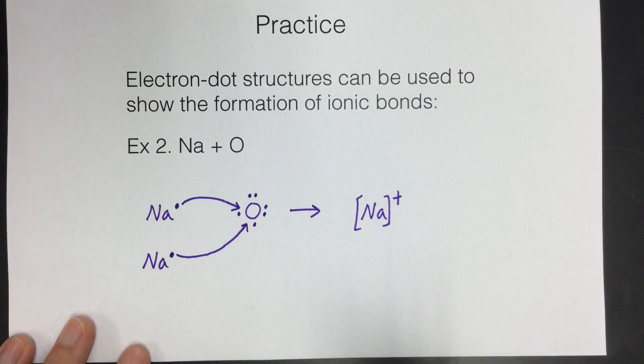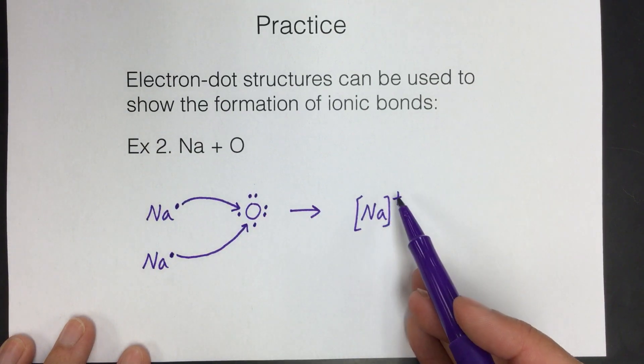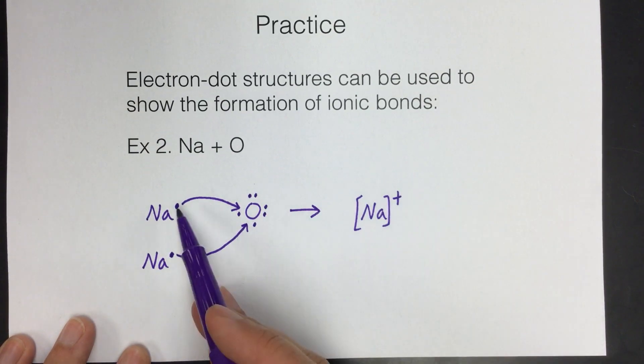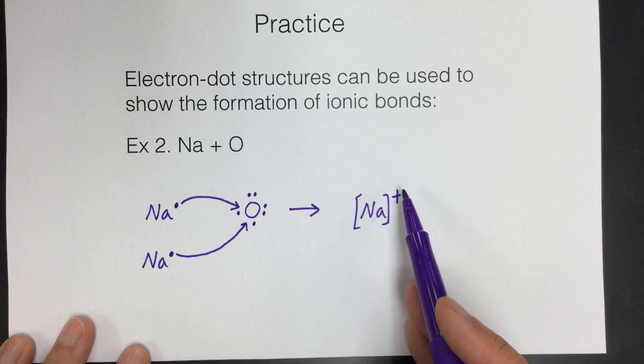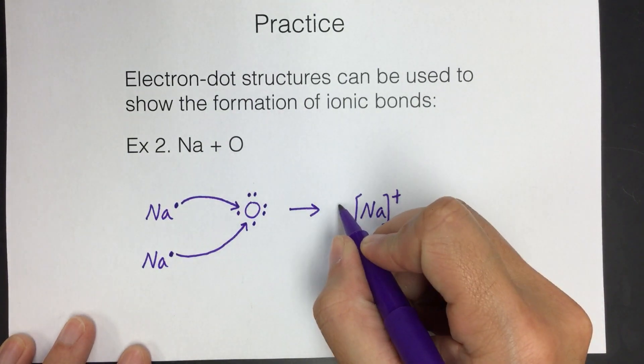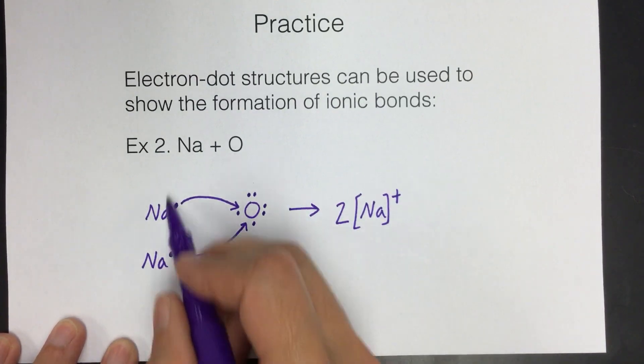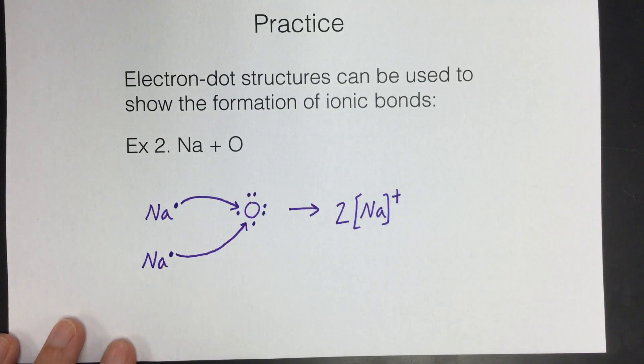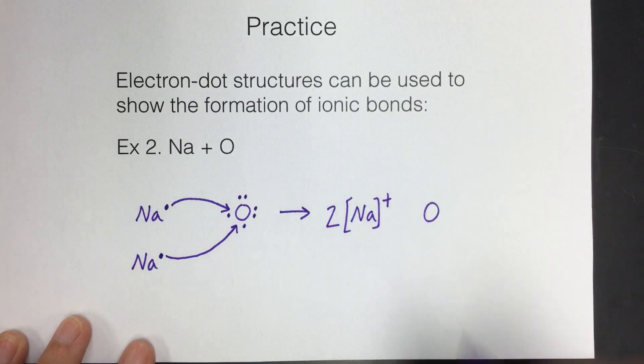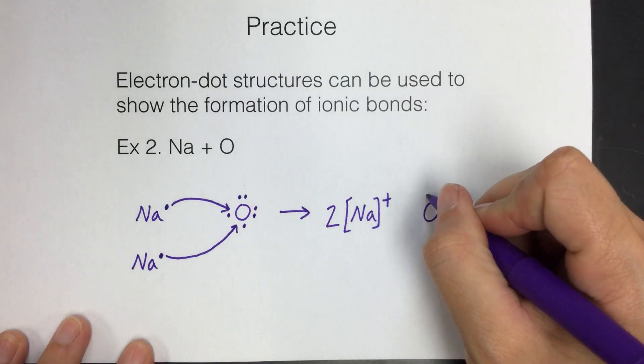And then this is a little bit tricky. We used two sodiums. So we need to show that somewhere. We don't show it in the charge because the charge is not positive two. It only lost one electron. So it has to have a plus one charge. So we put a big two right here to show that there were two of these things. And then oxygen used to have six electrons. It gained two. So now it has eight electrons.